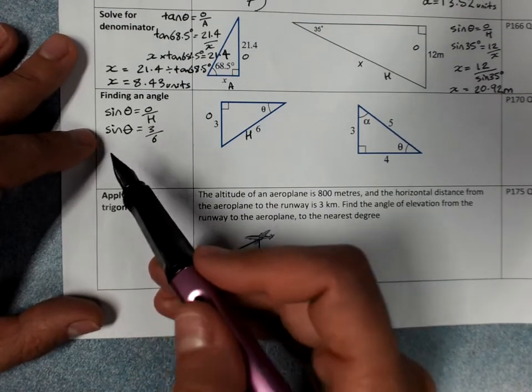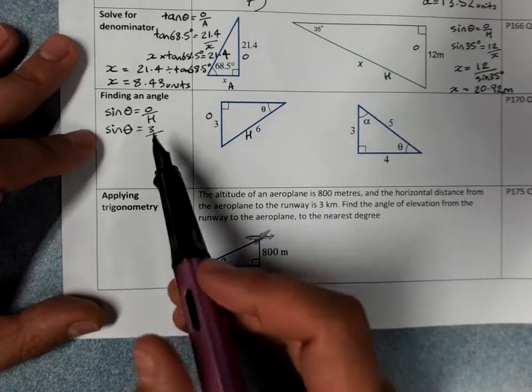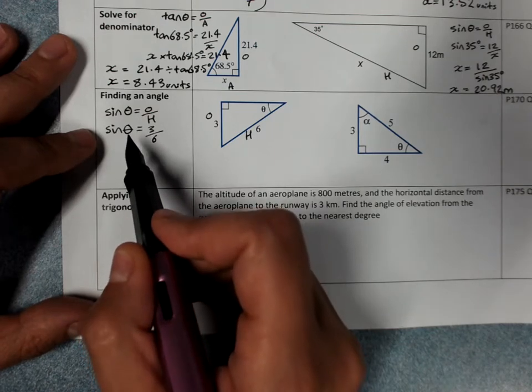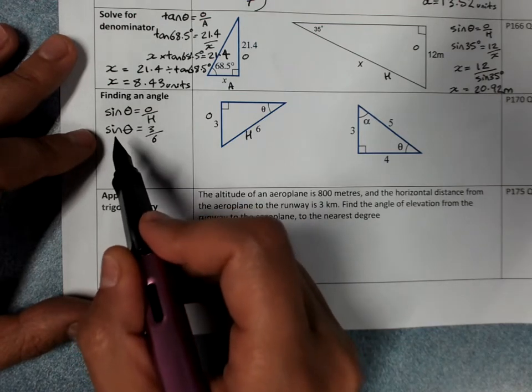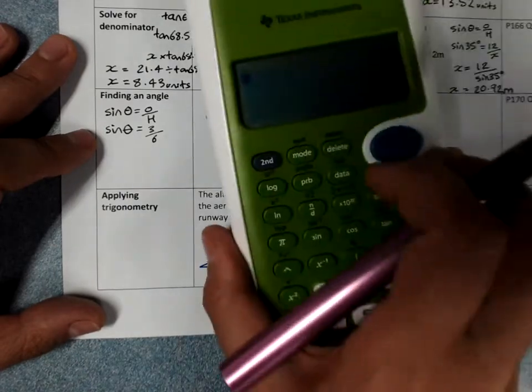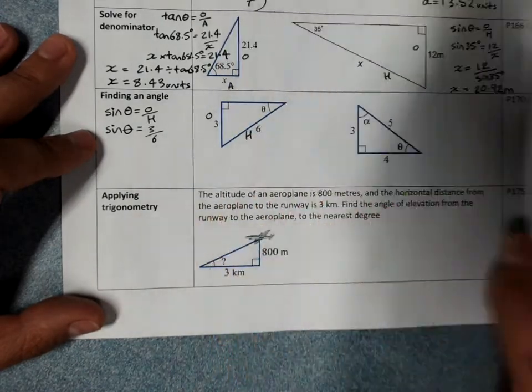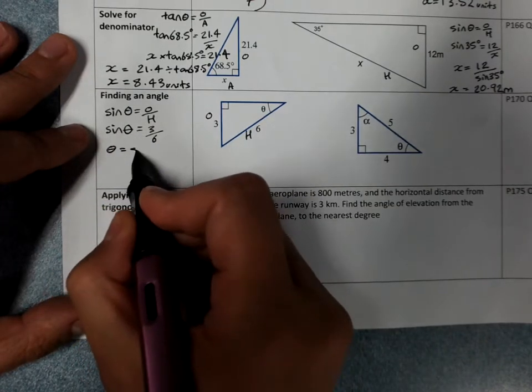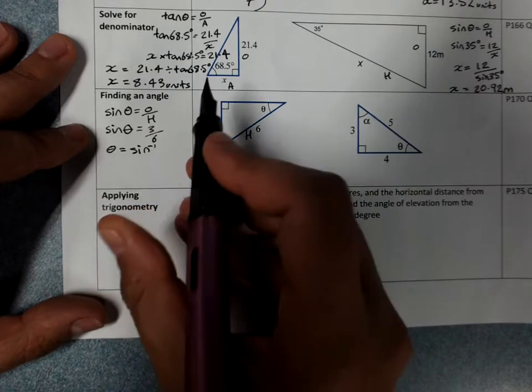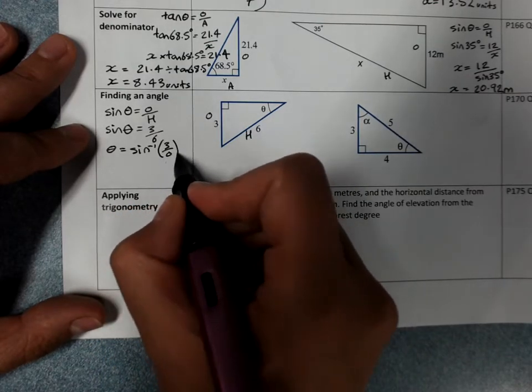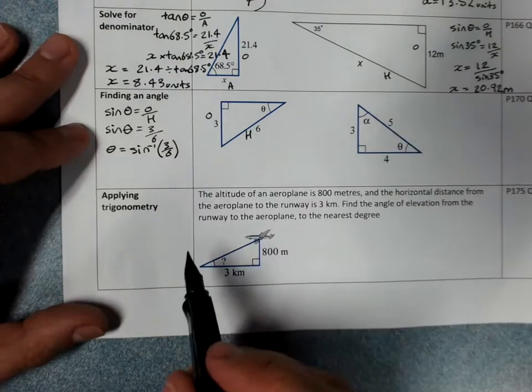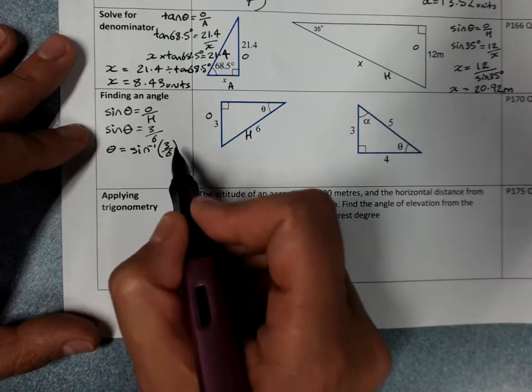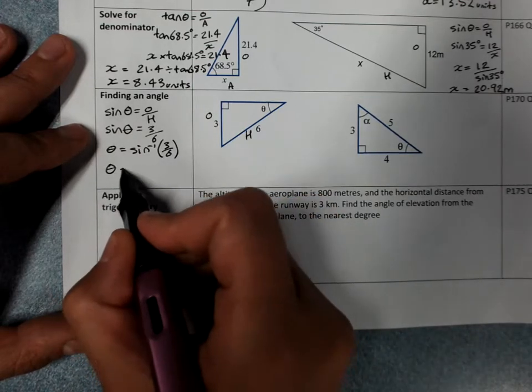Now, what this is telling me is that I need to get theta on its own. And here's another example where showing really good working supports you to remember what to do. Because when you see an unknown angle in here, you know you're going to end up using inverse of sine, cos, or tan. The second function key on your calculator. To get rid of this sine and just have theta, we need to do the opposite of sine to the other side. 3 over 6 could be a half, by the way. Either one would work. So theta equals inverse sine of 3 over 6.